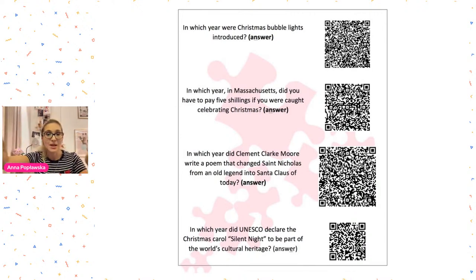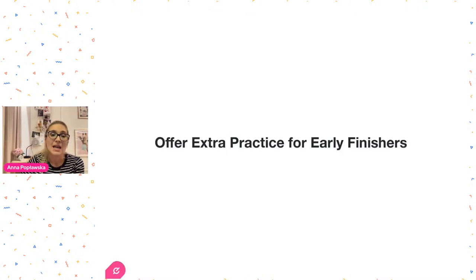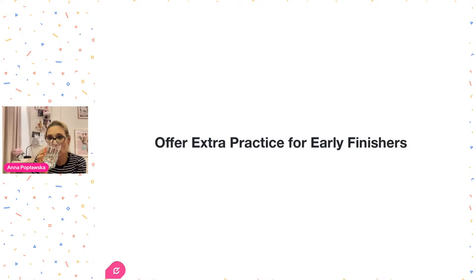A QR code is great for matching activities — questions and answers, pronunciation, or missing vocabulary that students have to match. They can hear a word in a QR code. QR codes also work as really great extra practice for early finishers. If you put a QR code in the corner of a handout, students who finish early can scan it quietly without disturbing the rest of the class.